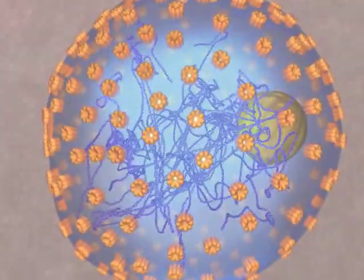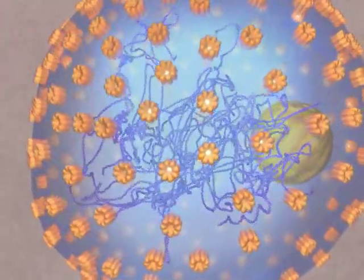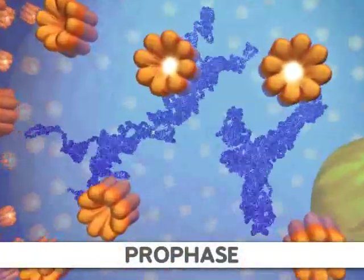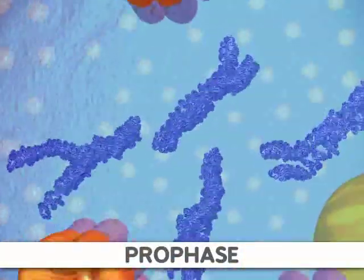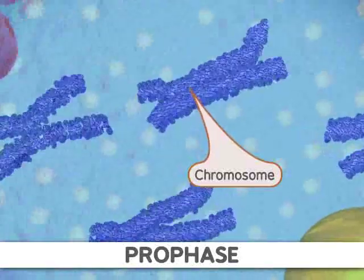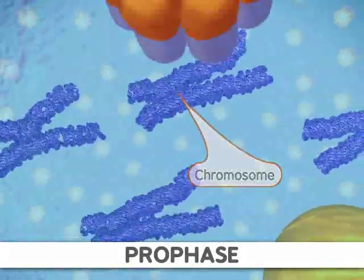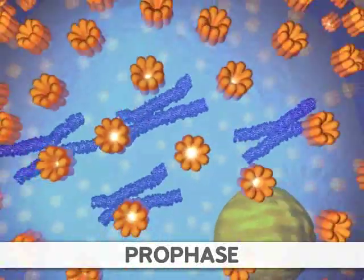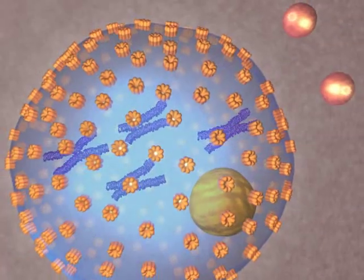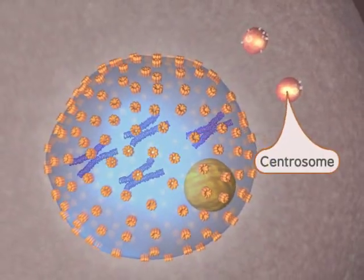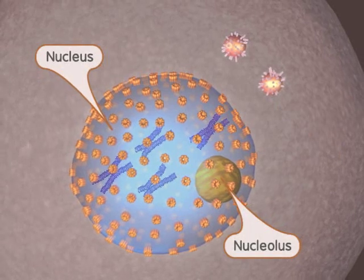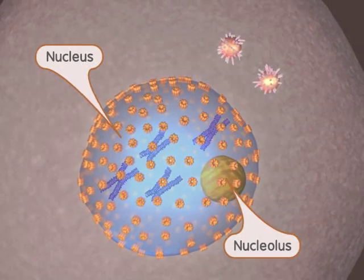During the first stage of mitosis, called prophase, we first see the classic chromosome structure. This occurs through a condensation process. At the same time, protein strands called microtubules appear from the centrosomes in animals. Finally, a structure found within the nucleus, the nucleolus, disappears.